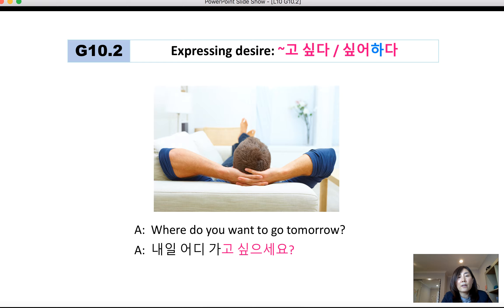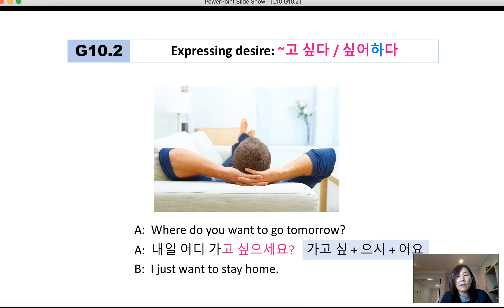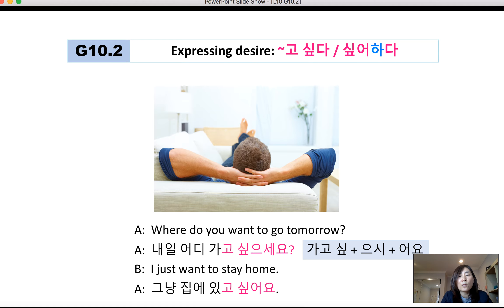Where do you want to go tomorrow? 내일 어디 가고 싶으세요? Depending on the level of respect, you can include the honorific 시 to 싶다, giving 가고 싶으세요. However, when you describe your own action, you do not use the honorific. You must say 고 싶어요, not 고 싶으세요. 그냥 집에 있고 싶어요 — 'I just want to stay home.'